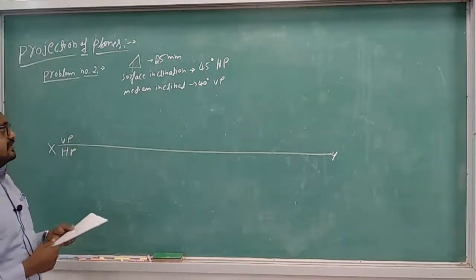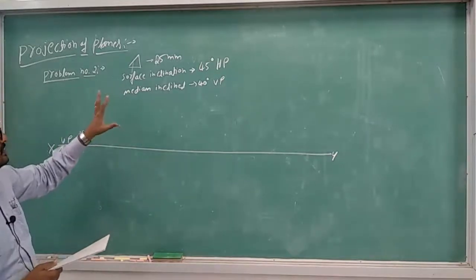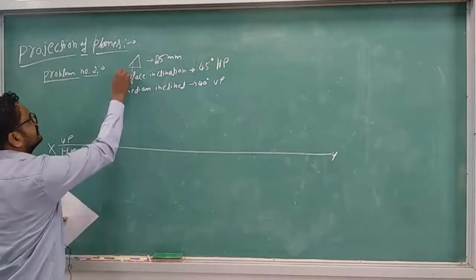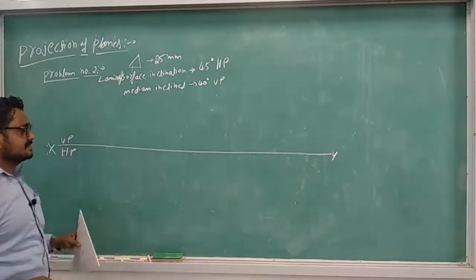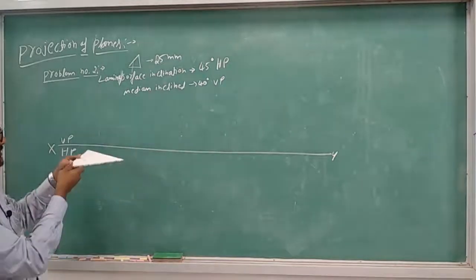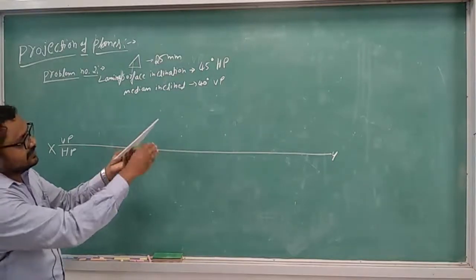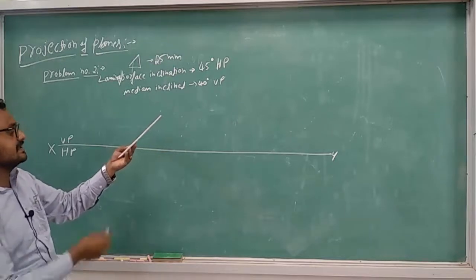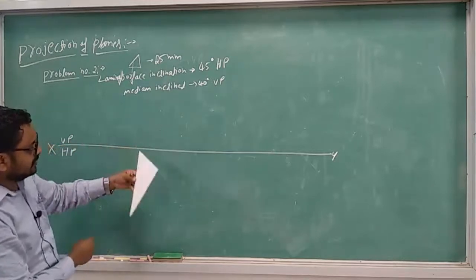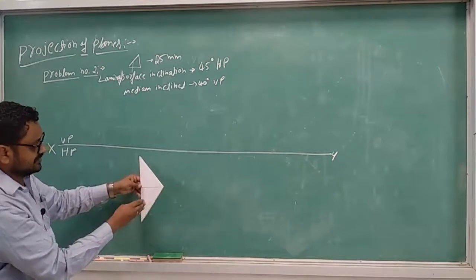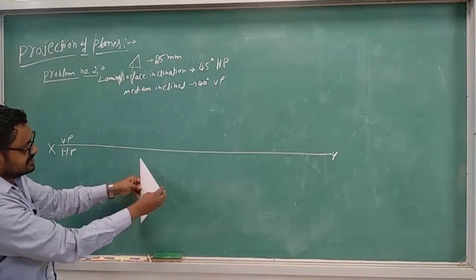Coming to the second step, they give us surface inclination — the surface or lamina inclination is inclined 45 degrees to HP. In the second step, by keeping the resting edge condition on HP, we need to make the plane at 45 degrees with HP. The front view straight line will be made inclined at 45 degrees. In the top view, two edges will be reduced in length while the edge parallel to HP will remain the same.